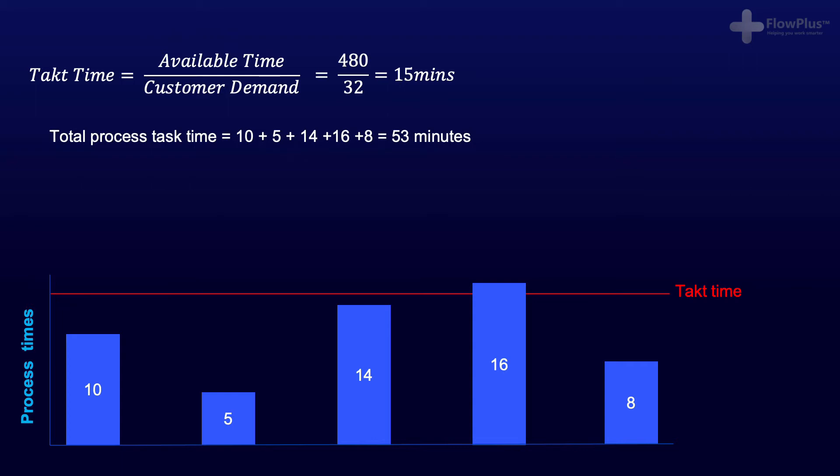Now that we have the total number of work content, we divide it by the takt time. This tells us theoretically how many operators do we need to do the work. The reason I say theoretically is because in reality, we don't want to fully load each operator to 100% utilization levels.